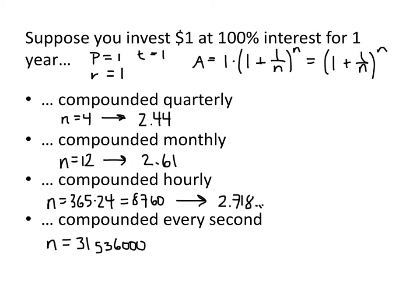So if we plug that number into our formula, how much more money will we get? Well, it turns out not all that much more than what we got compounding every hour. It's still 2.7182824.